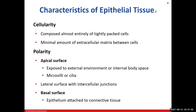Continuing on with the characteristics: cellularity is the name we give to describe this tissue as being tightly packed with virtually no or very little extracellular matrix. So minimal or no extracellular matrix and tightly packed cells — we call that cellularity.